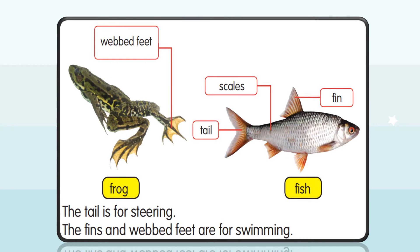This is a picture of a frog. This frog has webbed feet. And this is a picture of a fish. Fish have tails, scales, and fins. The tail is for steering.